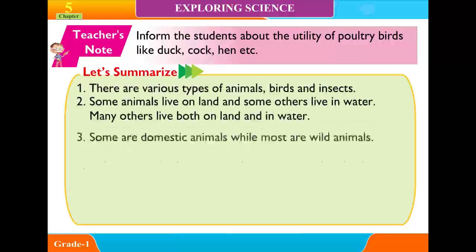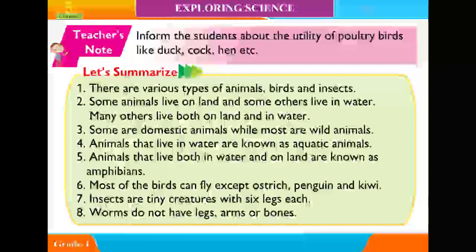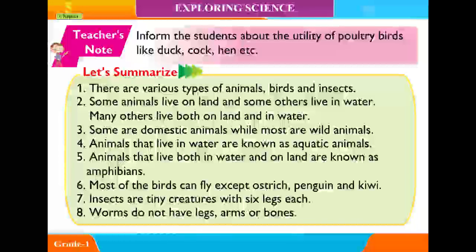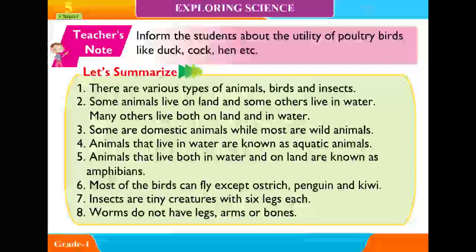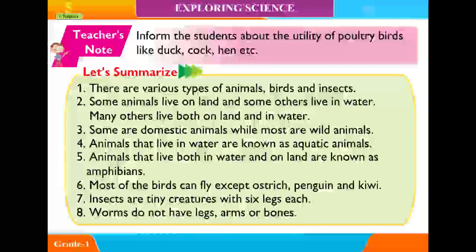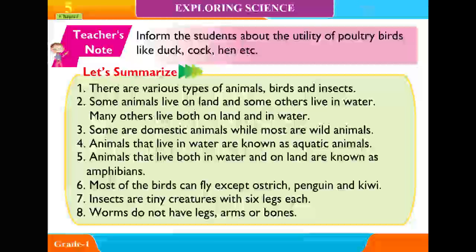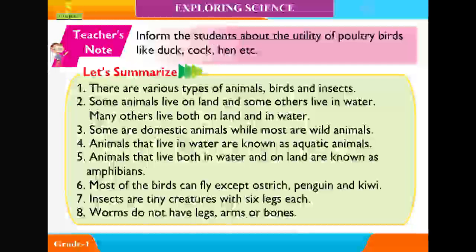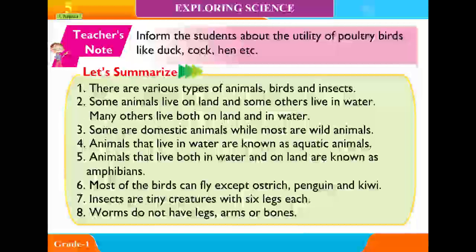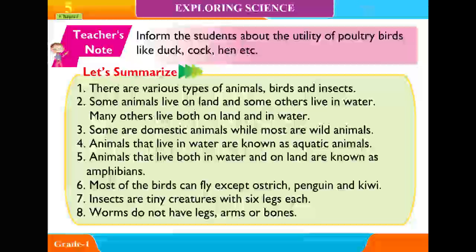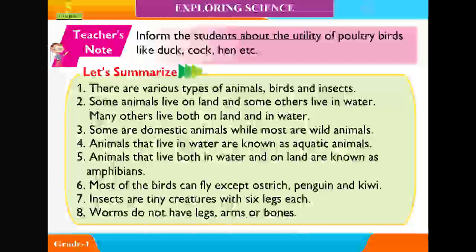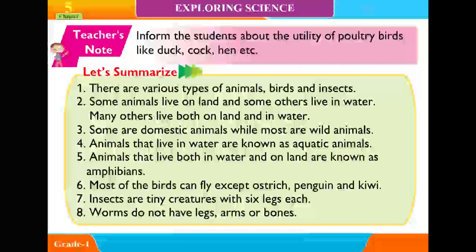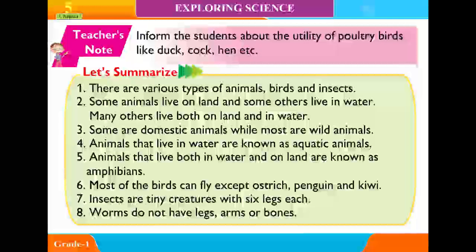Let's summarize. 1. There are various types of animals, birds and insects. 2. Some animals live on land and some others live in water; many others live both on land and in water. 3. Some are domestic animals while most are wild animals. 4. Animals that live in water are known as aquatic animals. 5. Animals that live both in water and on land are known as amphibians.